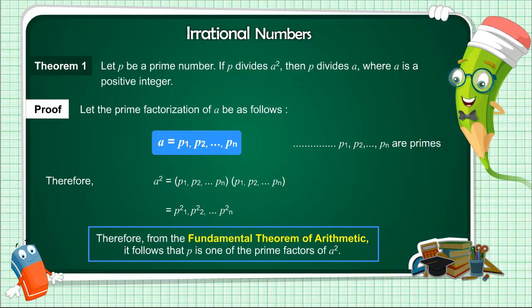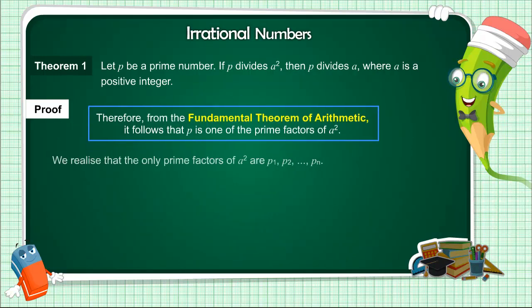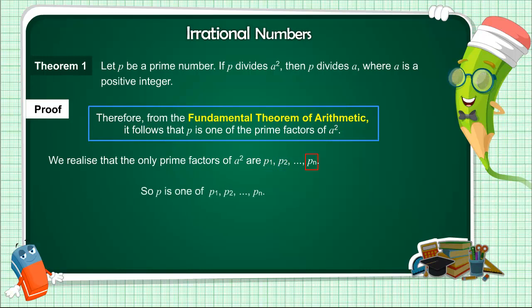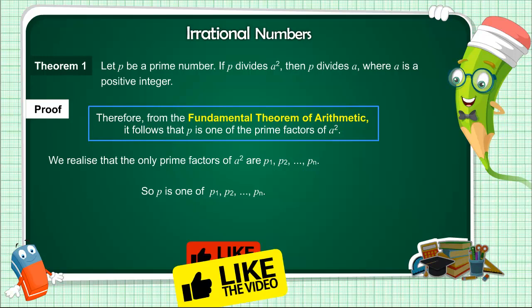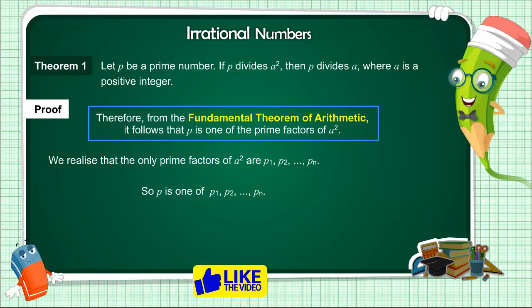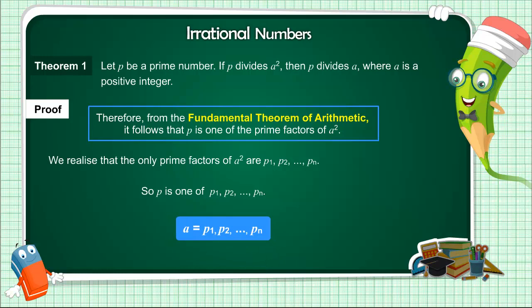However, using the uniqueness part of the Fundamental Theorem of Arithmetic, we realize that the only prime factors of A squared are P1, P2, ..., Pn. So P is one of P1, P2, ..., Pn. Now, since A equals P1 · P2 · ... · Pn, P divides A.